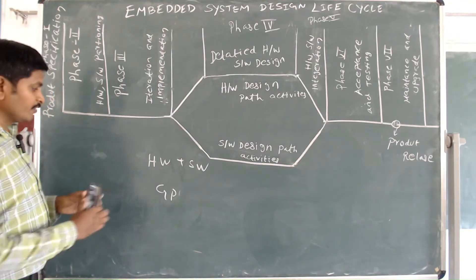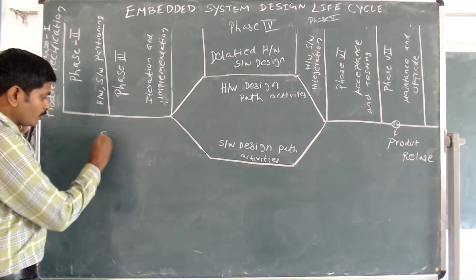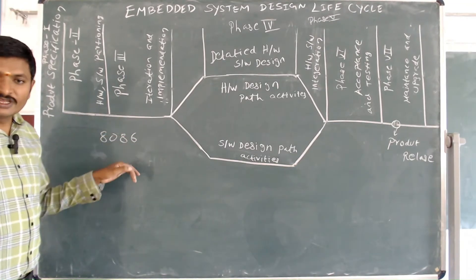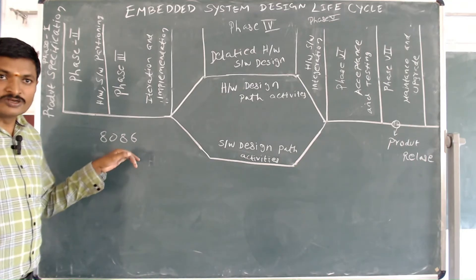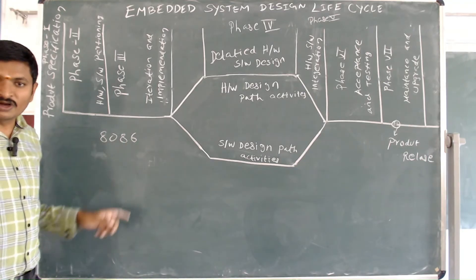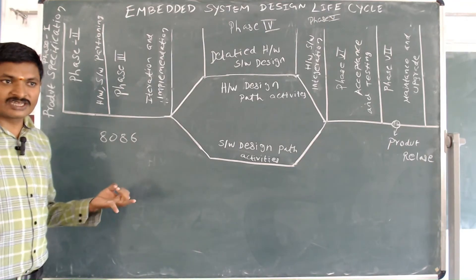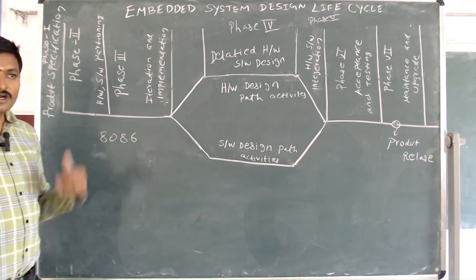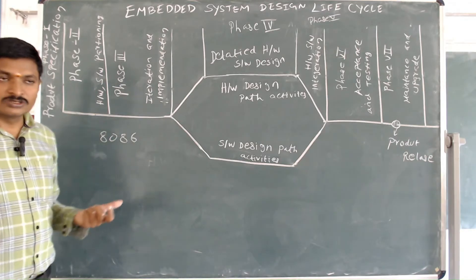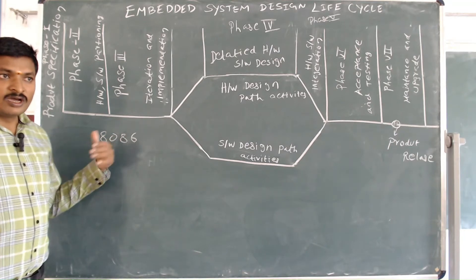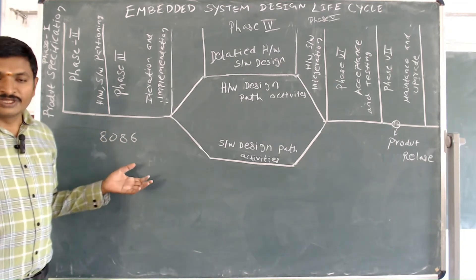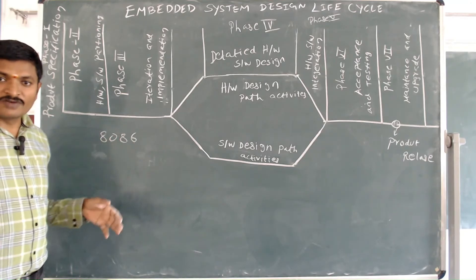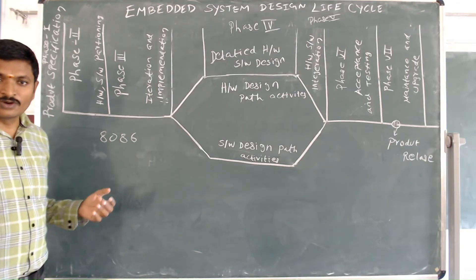For example, consider the 8086 microprocessor. It has a built-in ALU unit used to perform arithmetic operations like addition, subtraction, multiplication, and division. However, the 8086 cannot perform floating point operations in hardware. So floating point operations can be executed at the software or program level instead.